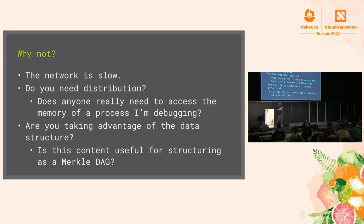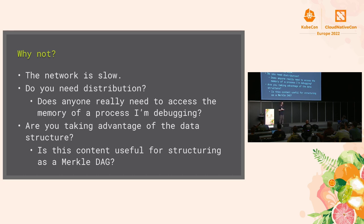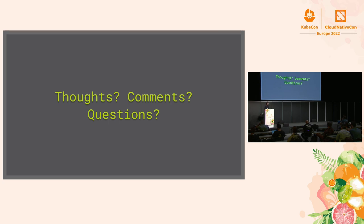Jason listed several good applications for storing non-image things in registries — Crossplane does this extensively. The demo illustrates distribution: you could pull it down and view it on Docker Hub. It was also free — Docker Hub accepted pushes and auto-created the repository. But be judicious: here, the network is far too slow for emulation, we don't need distribution for a local debug process, and we're not taking advantage of the registry's Merkle DAG data structure with such tiny, non-reused payloads.